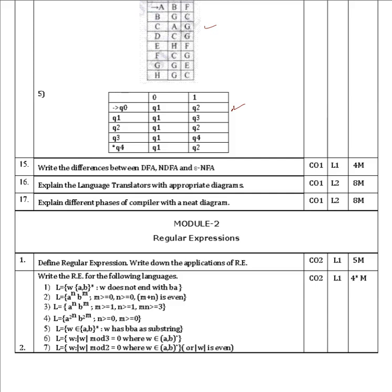This is another standard repeatedly-asked problem: minimize the DFA using the table filling algorithm. The final state is D for this problem. Next: write the differences between DFA, NFA, and epsilon-NFA. Also explain language translators with appropriate diagrams and explain the different phases of a compiler — worth 8 to 10 marks in module one.